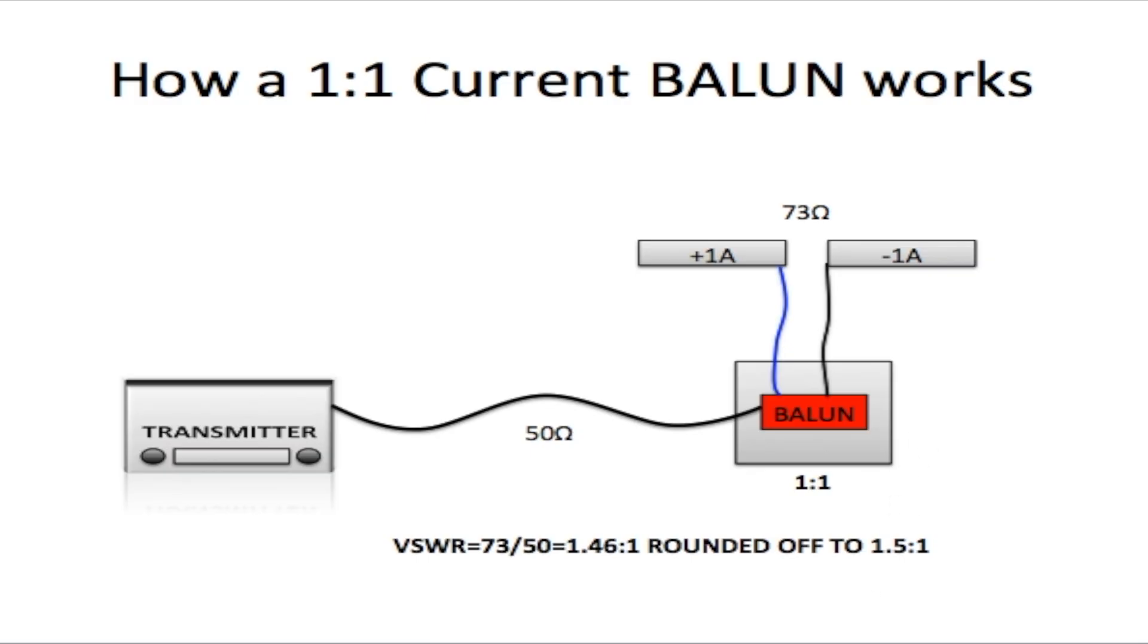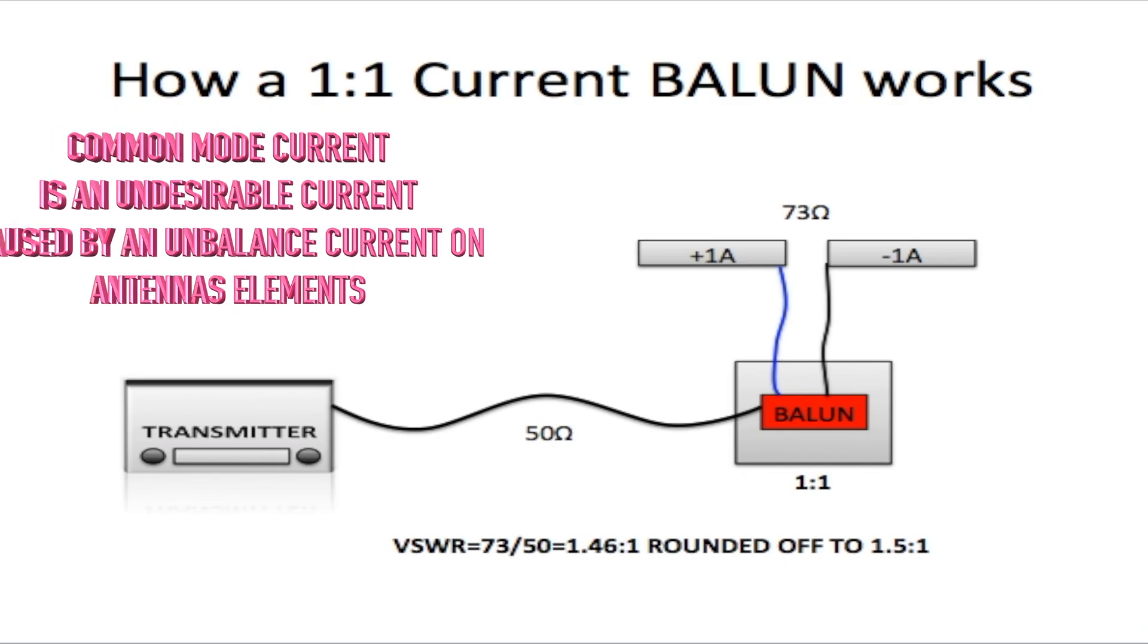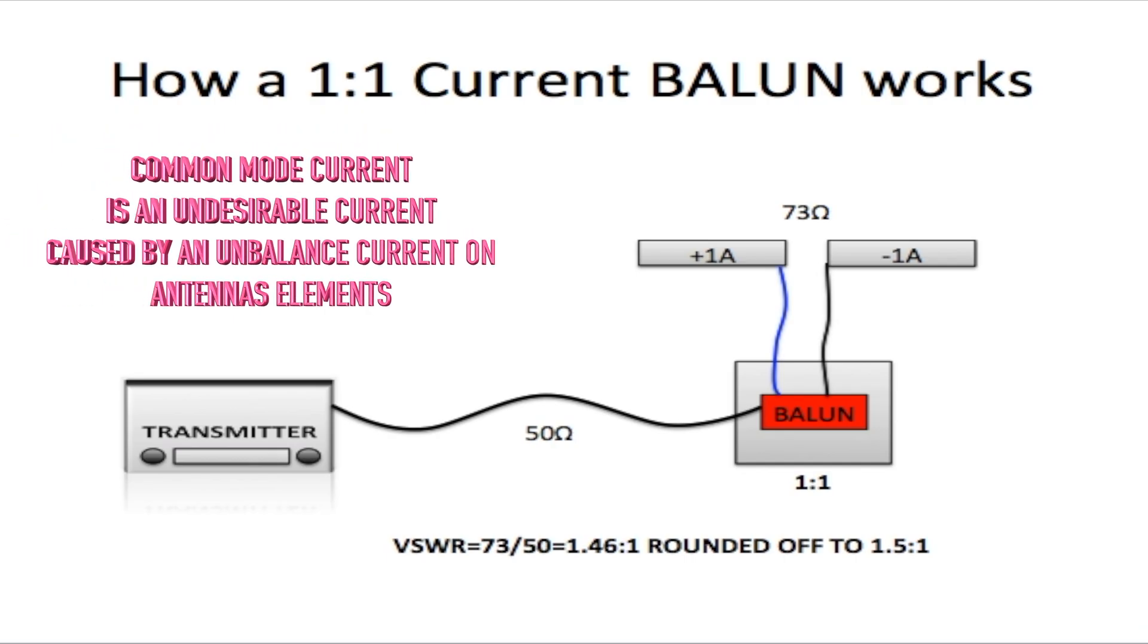As I said before, the 1:1 Balun does not change impedance. What it does is to ensure equal and opposite current flow into the antenna by matching the unbalanced coax with the balanced dipole antenna. If the current on both sides of the antenna is plus and minus 1 amp, there won't be any common mode current flowing back from the antenna because the current is balanced on both sides.